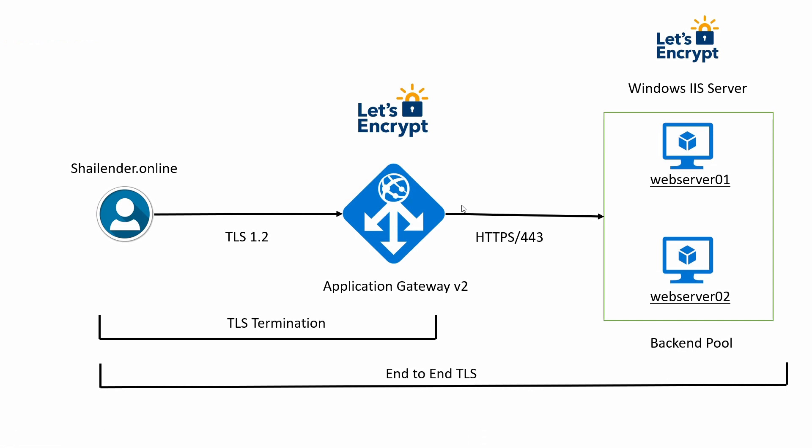To summarize: we first created two Windows web servers 01 and 02 and installed IIS. We generated a Let's Encrypt certificate on one of the servers, then imported that certificate on both web servers so they listen on port 443. On the application gateway, we updated the listener, backend settings, and routing rules to use HTTPS with the certificate. Since the certificate was generated for shalinder.online, when we open shalinder.online using HTTPS in the browser, the connection is secure end-to-end from browser to web server. That's all for this video — please like and subscribe, thank you!